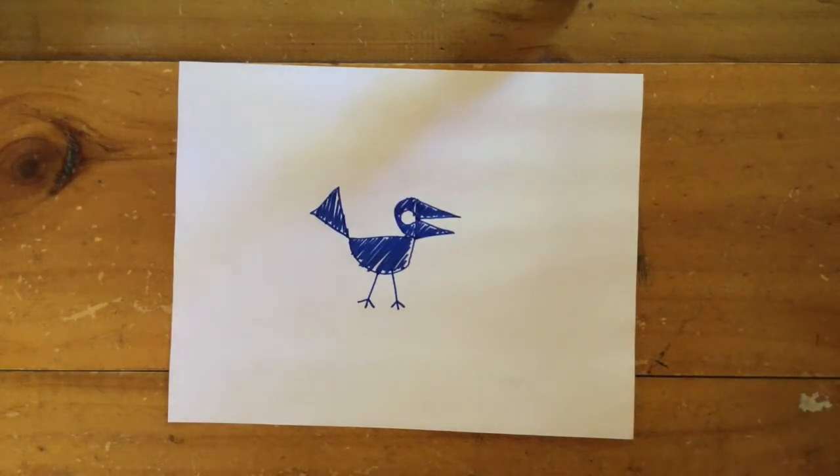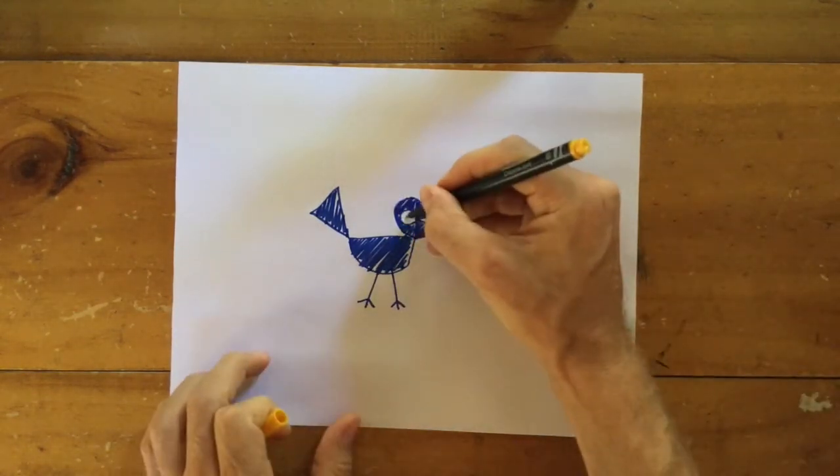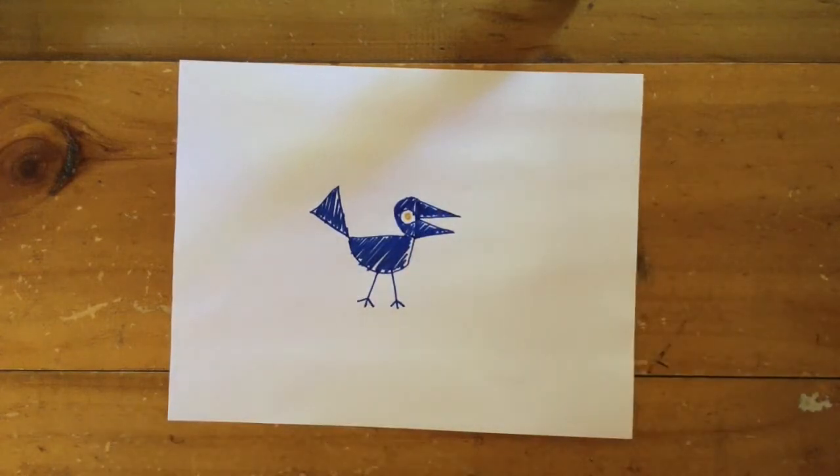And an eye. We could use another colour for the eye. Let's go back to the golden nugget. Excellent. There we go.